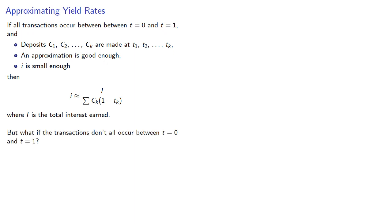But what if the transactions don't all occur between t equals 0 and t equals 1? That's actually a pretty easy fix. As follows, the interest rate is computed per unit of time.